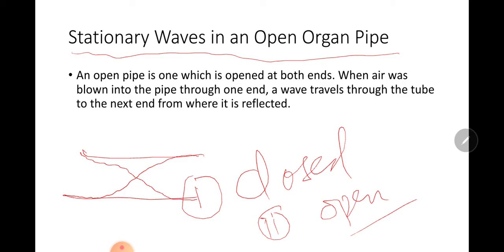When air is blown into the open organ pipe, the molecules of the air column start vibrating freely at the open ends with maximum amplitude. As a result, anti-nodes form at both ends and nodes form somewhere inside the pipe.